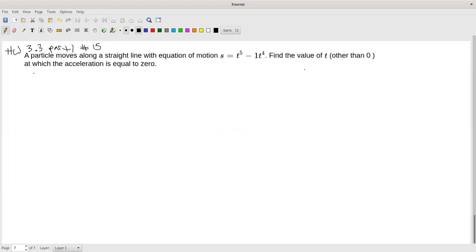So reminder about that. This position is that equation right there: position equals t to the 5th minus t to the 4th. To get to acceleration, I need velocity next. Velocity is the derivative of position. And acceleration is the derivative with respect to time of velocity.